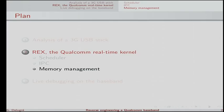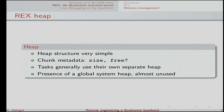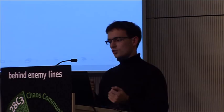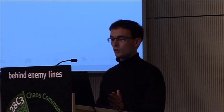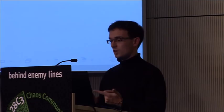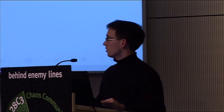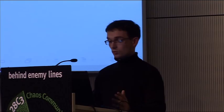The memory management: you have a heap, of course. There is a global heap in the system, but actually I don't really know why it's not very used. Each task implements their own heap with the same code, but they have separate heaps at a fixed hard-coded address. The heap structure is very simple — the heap metadata keeps track of the first and last block. For each chunk, you see the size of the data and whether the block is free. The next block is just the block after current block plus the size. There is no defragmentation. It's very quick and efficient.